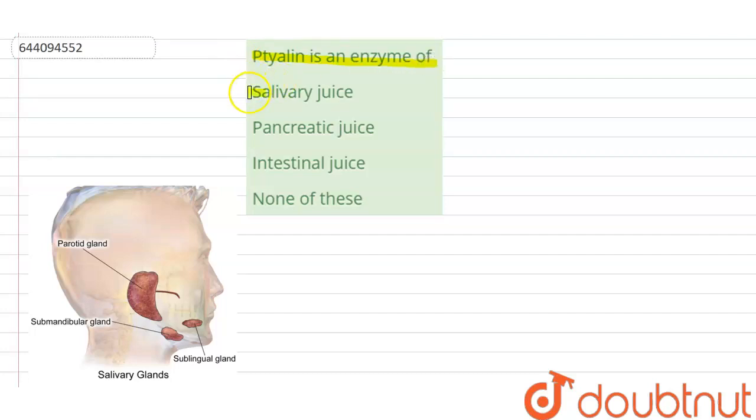Ptyalin is an enzyme of salivary juice, pancreatic juice, intestinal juice, or none of these? Enzyme ptyalin is also known as salivary amylase.